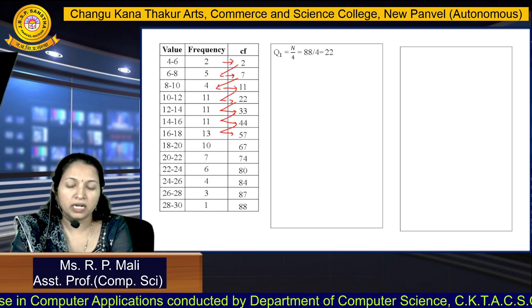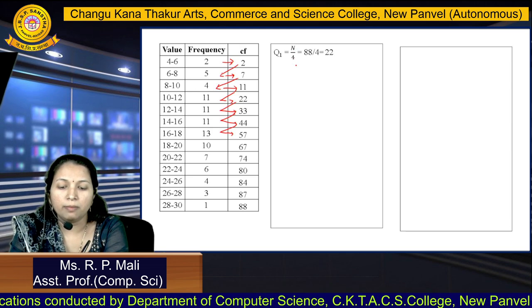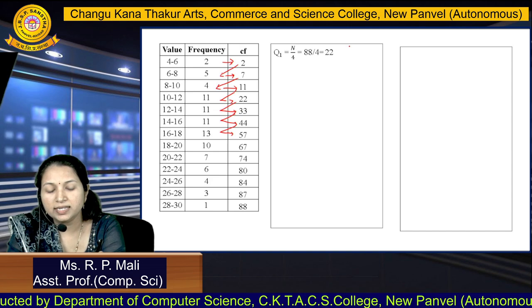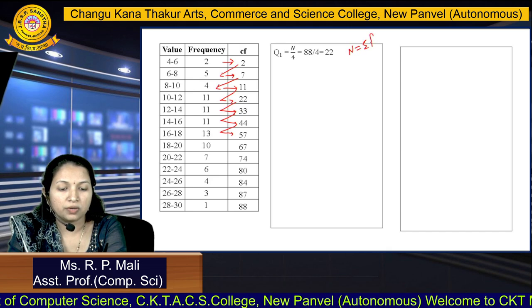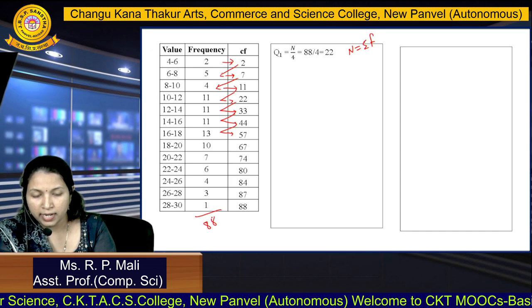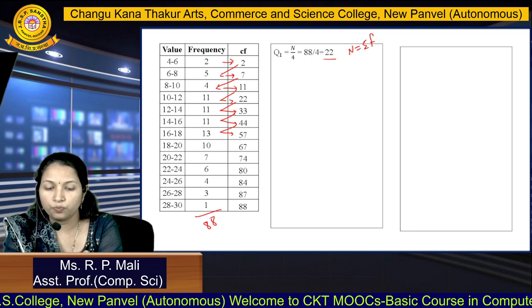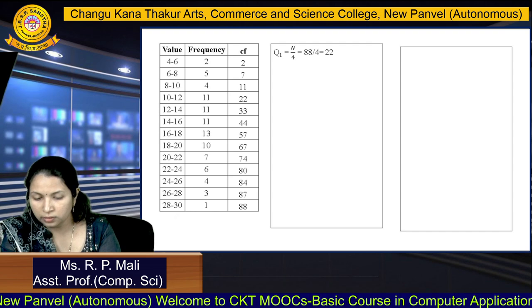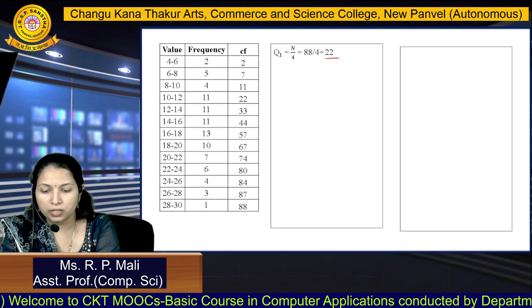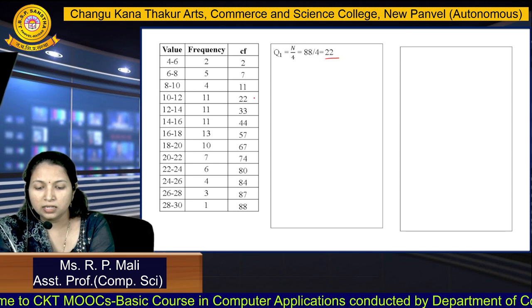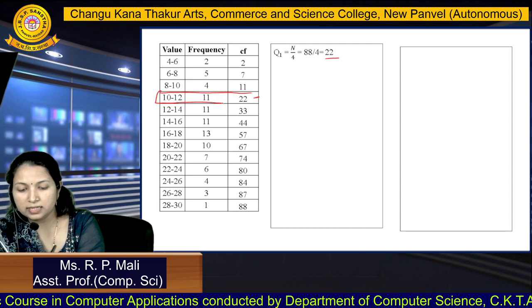We are going to apply the formula to find the first quartile item. How to find the first quartile item? N by 4. Your N, for the continuous and discrete series, is the summation of frequency. The summation of this frequency is 88. So N by 4: 88 by 4 is 22. You are going to find this 22 in the cumulative frequency. As you can see, here you are able to see the 22, so your first quartile item will lie in this class.